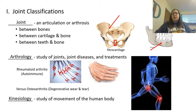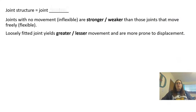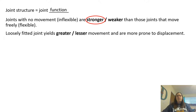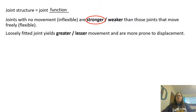Kinesiology is the study of the movement of the human body. Joint structure is directly linked to joint function. If a joint has no movement or is inflexible, it's going to be stronger than a joint that is more freely flexible. If it's cemented together with no movement, it's obviously going to be stronger. Loosely fitted joints have greater movement, but they're also more prone to dislocation or displacement.